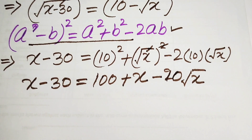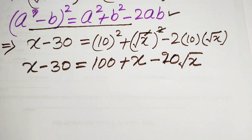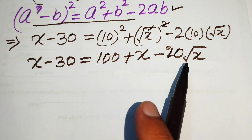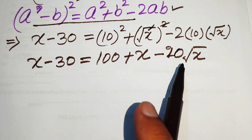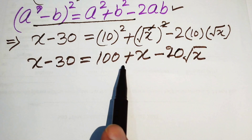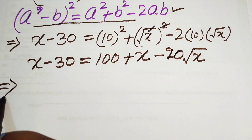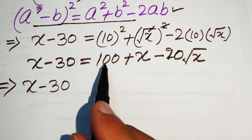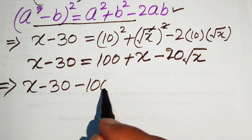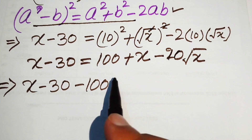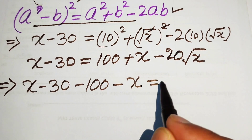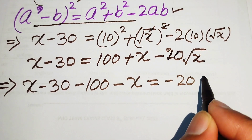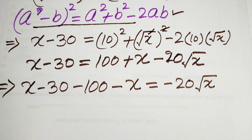Our first target was to eliminate the square root sign. Now we isolate the square root term by moving all other terms to the left hand side. Moving 100 gives minus 100, and moving x gives minus x, leaving minus 20 times square root of x on the right hand side. So: x minus 30 minus 100 minus x equals minus 20 times square root of x.